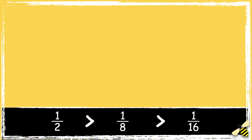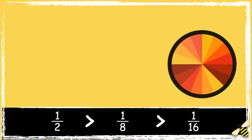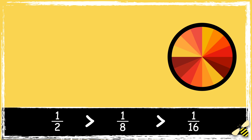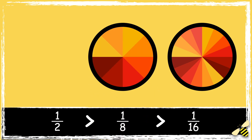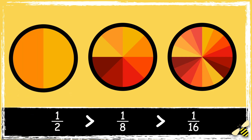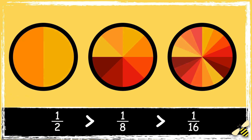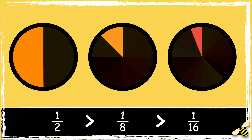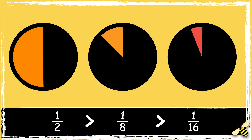This can be a bit confusing as 16 is the greater number. If you think of one pizza that's been split into 16 slices, and another pizza that has been split into 8 slices, and another pizza that's split into halves — if you're hungry and you want some pizza, which slice would give you the most? So if you're sharing a whole between larger numbers, it results in smaller portions.